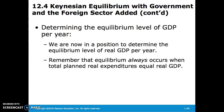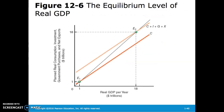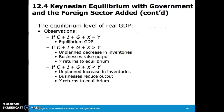We are now in a position to determine the equilibrium level of real GDP per year. Remember that equilibrium always occurs when total planned real expenditures equal real GDP. We can create our total expenditures curve by adding investment, government spending, and net exports. If our total of consumption, investment, government spending, and net exports equals real GDP, then we are at equilibrium GDP.